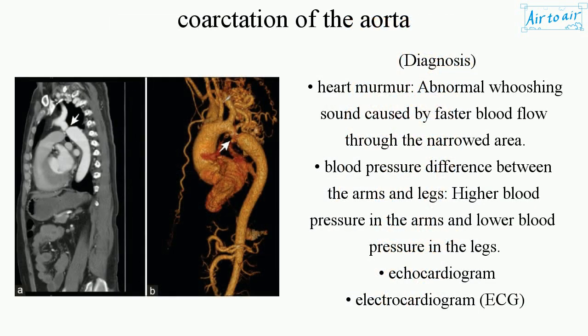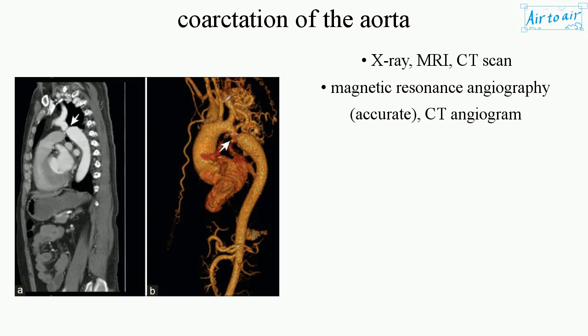Diagnosis includes detecting a heart murmur — an abnormal whooshing sound caused by faster blood flow through the narrowed area — and a blood pressure difference between the arms and legs, with higher pressure in the arms and lower pressure in the legs. Diagnostic tests include echocardiogram, electrocardiogram (ECG), X-ray, MRI, CT scan, magnetic resonance angiography, and aortic angiogram.